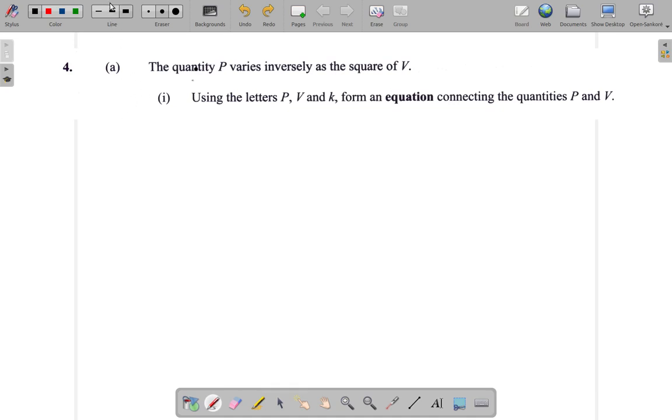P varies inversely as the square of V. Now, if you have two quantities vary, if it was, let's say A and B vary, so that A and B varies directly.